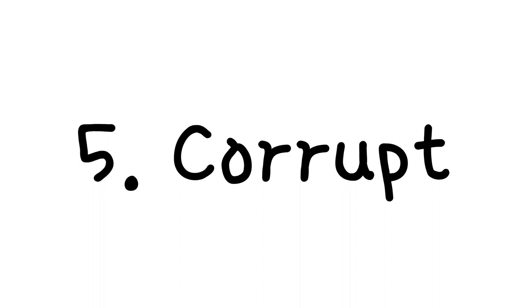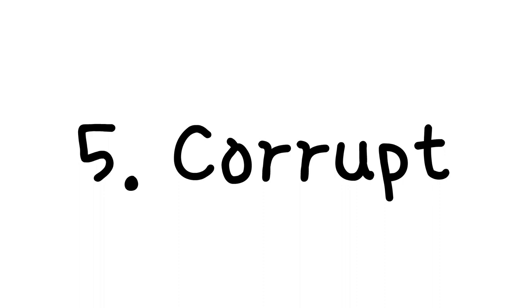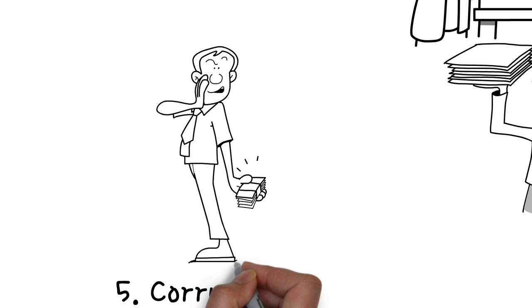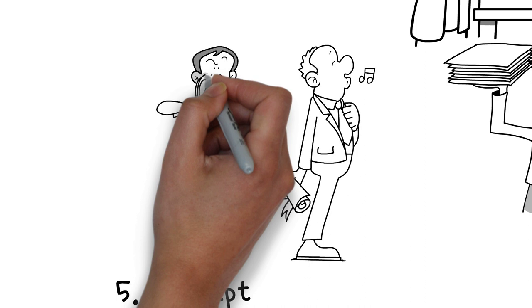Corrupt. Is your boss economic with the truth? Are they happy to gain an advantage by any means? Do they take liberties with their expenses or with other company resources? If so, then your manager may well be corrupt.